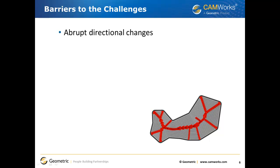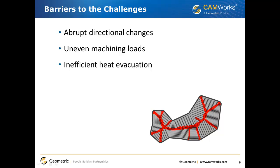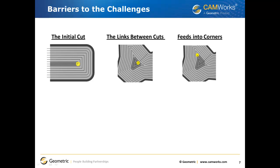There are also several barriers to meeting these challenges. In a typical roughing process, the machine often makes abrupt, dramatic changes in direction. The cutter and machine experience uneven loads due to inefficient chip evacuation. Heat is introduced into the part, often causing deformation, and also into the cutter — shortening tool life and making cutter life unpredictable. Additionally, an initial cut is required where the full diameter of the cutter is engaged, subsequent passes must be linked, and material in corners must be removed.